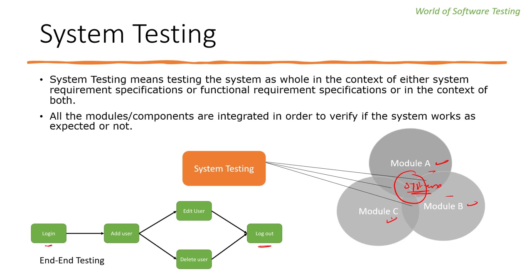System testing is essentially end-to-end testing — testing the complete functionality from its initial point to completion, including data integration among all modules. For example: login, adding users, editing or deleting users, and logging out. Before software is delivered to the customer or moved to production, it must go through system testing in a QA environment, which is a replica of the production environment with similar hardware and software configurations.